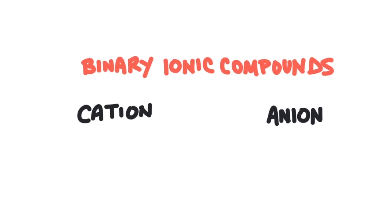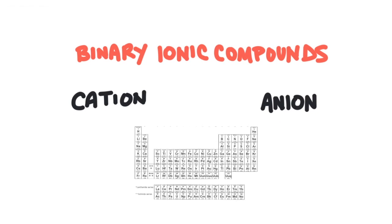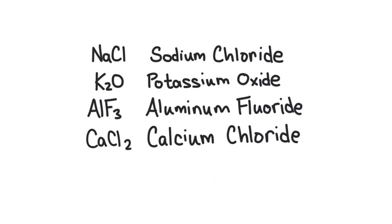Ionic compounds are compounds that contain a cation and an anion. A cation is a positively charged ion, usually a metal, which is an element on the left side of the periodic table. An anion is a negatively charged ion, usually a non-metal, which is an element on the right side of the periodic table. A binary compound is a compound that only has two different types of elements. Notice that each formula follows a pattern where the cation is listed first and then the anion is listed second, and the name follows the same pattern.